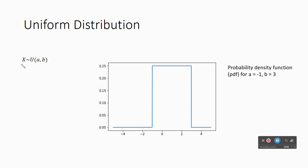When we have a random variable like this, we say that x is, this twiddle sign here, x is uniformly distributed between the value a and the value b.